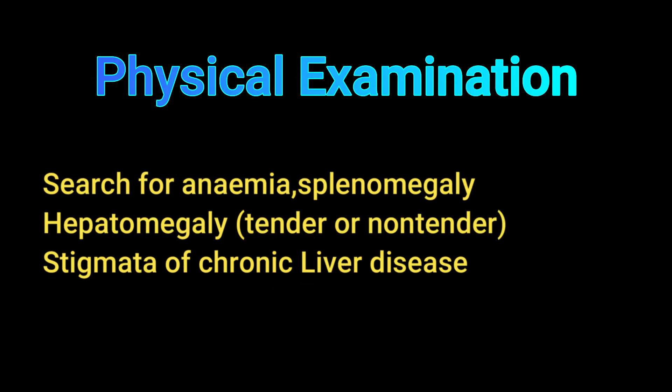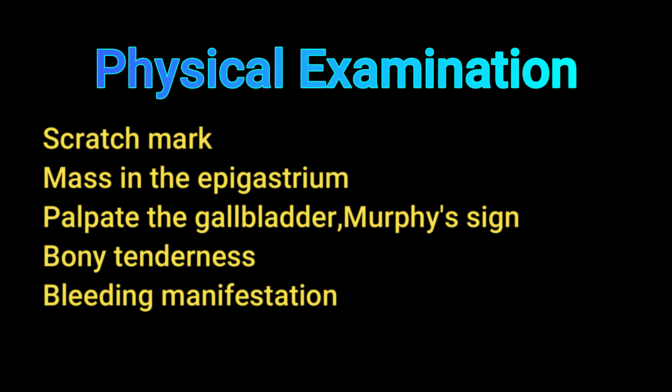On physical examination, search for anemia, splenomegaly, and hepatomegaly — and if hepatomegaly is present, whether it is tender or non-tender. Also look for stigmata of chronic liver disease: in the hands, palmar erythema, Dupuytren's contracture, and clubbing; in the upper chest, spider angiomata and gynecomastia; and in the face, spider angiomata.